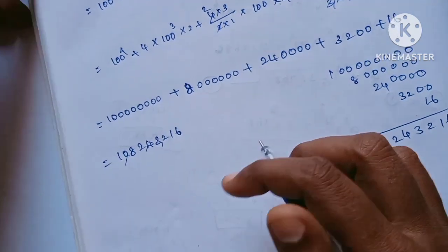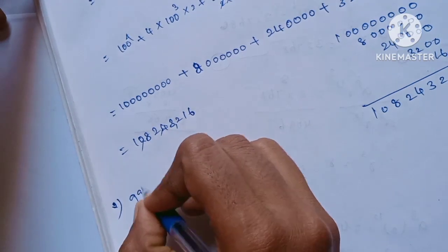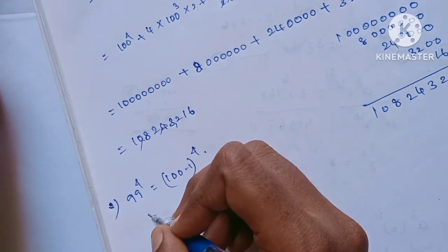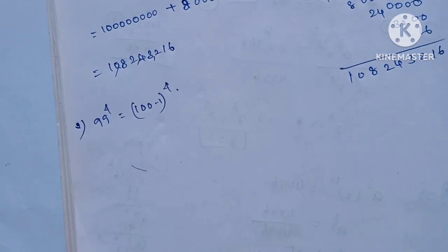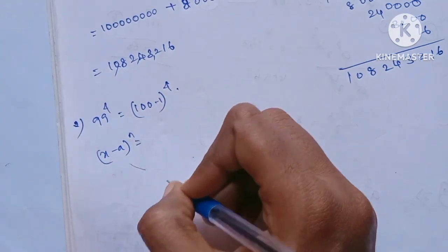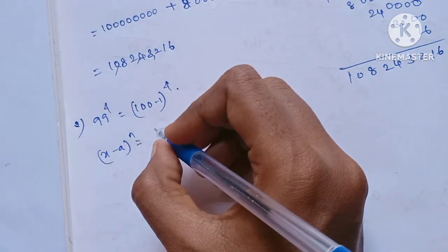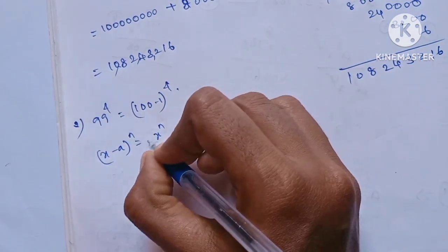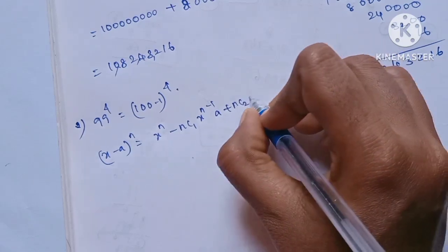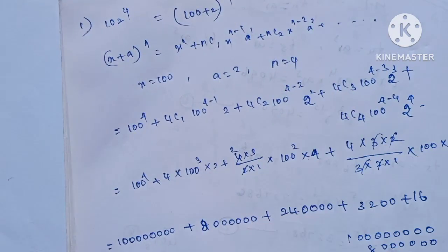Second question is 99 to the power 4. How do we do this? It becomes 100 minus 1 whole power 4. We don't use x plus a here; instead we use x minus a whole power n. So x is 100, a is 1, and n is 4. We substitute with minus 1 to the power 4.